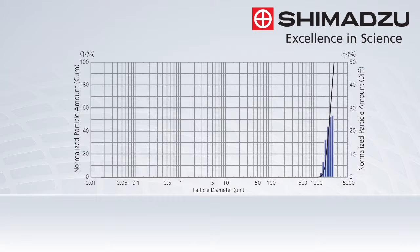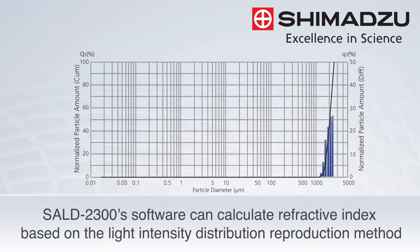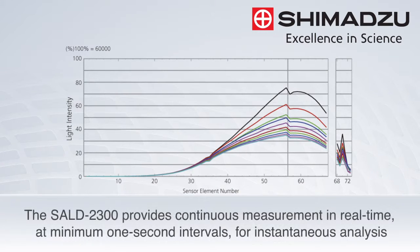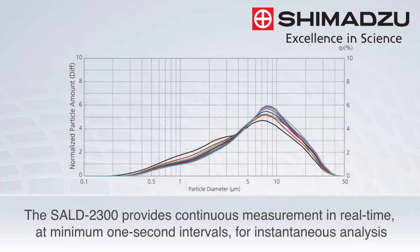Across this measurement range, the SALD2300 software can automatically calculate an appropriate refractive index based on the light intensity distribution reproduction method — the world's first software to perform this calculation. The SALD2300 provides continuous measurement in real time at minimum one second intervals for instantaneous analysis.